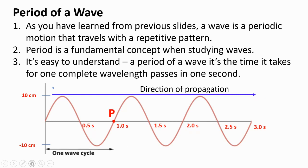To determine the period, we have to identify one complete wavelength — we can use the first one. That's one complete wavelength. Then we look at the time it takes for one complete wavelength to pass. In this case, it's one second. So the period of this wave is equal to one second.